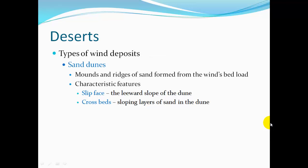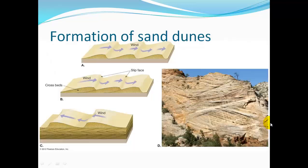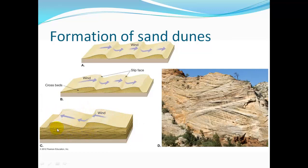Characteristic features of sand dunes include a slip face — the leeward slope of the dune — and cross beds, which are sloping layers of sand in the dune. As the wind blows sediment, it's dropping and pushing sand. The leeward side faces into the wind — that's your slip face. Sand dropping at the front edge causes these beds that become cross beds. As the wind changes direction seasonally or climate changes alter wind patterns, sand starts dropping in the other direction, creating a nice cross-bedding pattern. Here's some cross-bedding out in the desert.